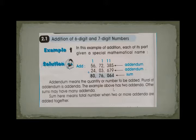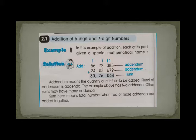Book page number 10, open your books also. Addition of 6 and 7 digit numbers. In the previous lesson on Notation and Numeration, you learned how to read 6 to 7 digit numbers. Here is example number 1 that I shared on your screen. Add: 567,385 and 243,679.